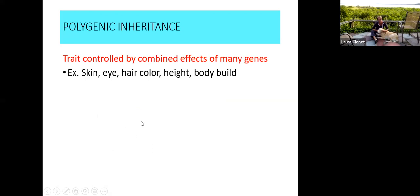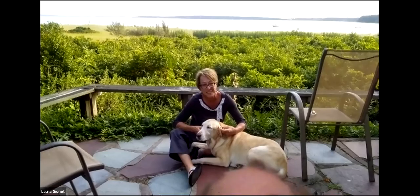Polygenic inheritance means traits are controlled by the combined effects of many genes. Skin color, eye color, hair, height, and body build are all products of a combination of different genes you inherit from your parents. That is the end of the development and inheritance notes.